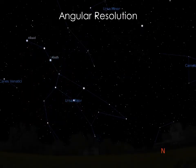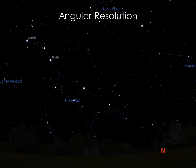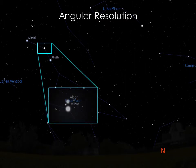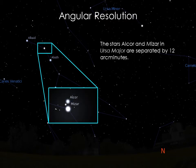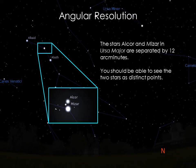The constellation of Ursa Major, more commonly known as the Big Dipper, has two stars that are relatively close. Alcor and Mizar in the handle of the Dipper are separated by 12 arc minutes. You should be easily able to distinguish these two stars with your eye.